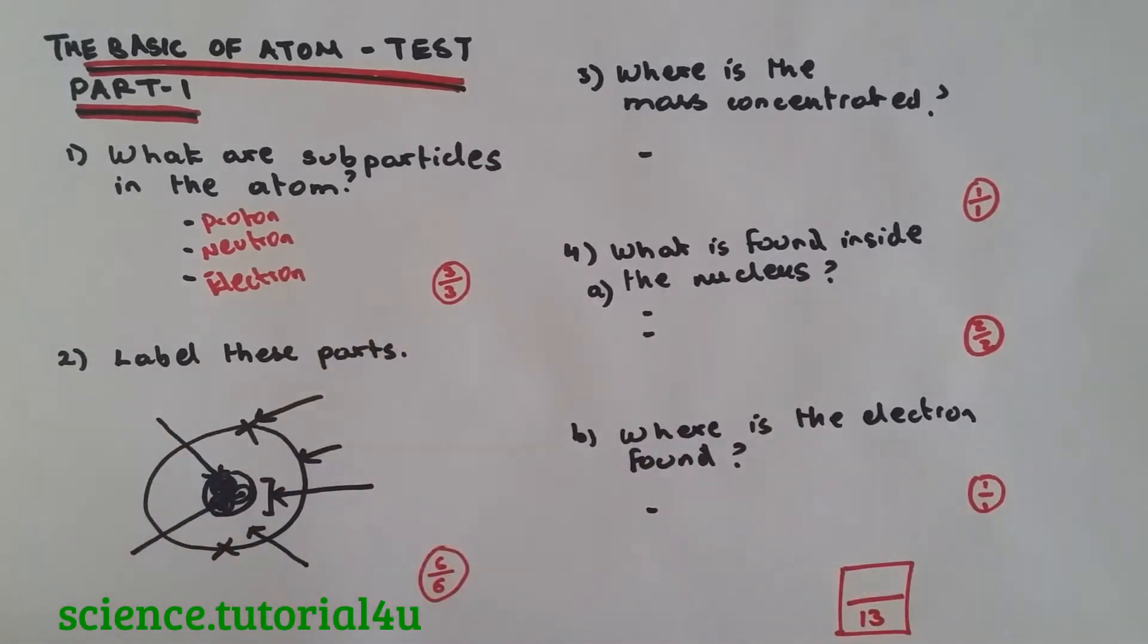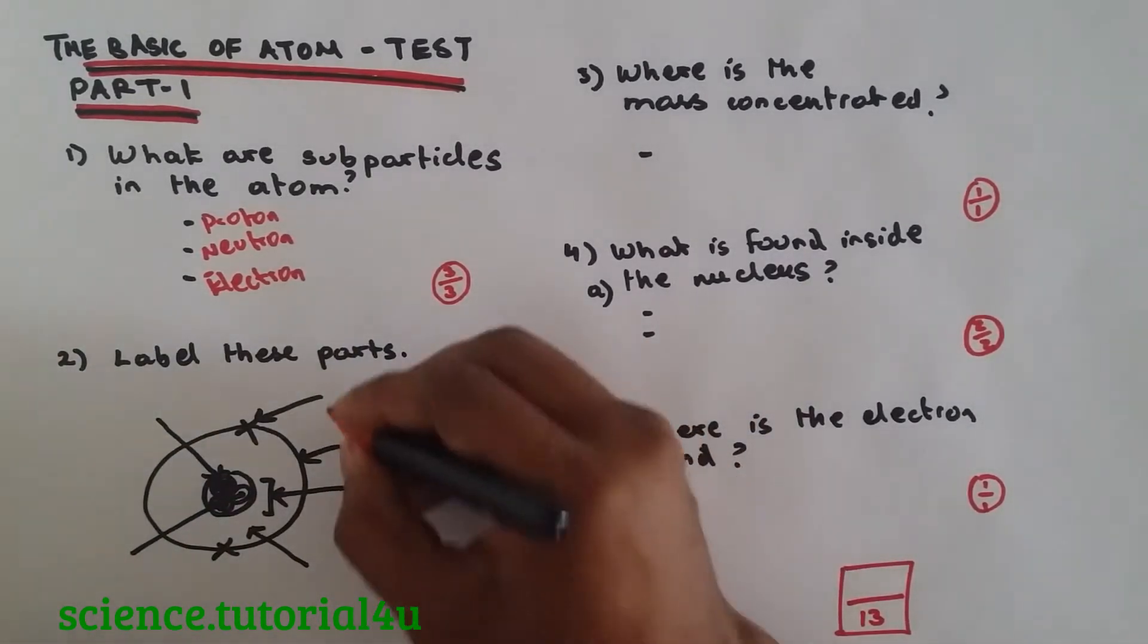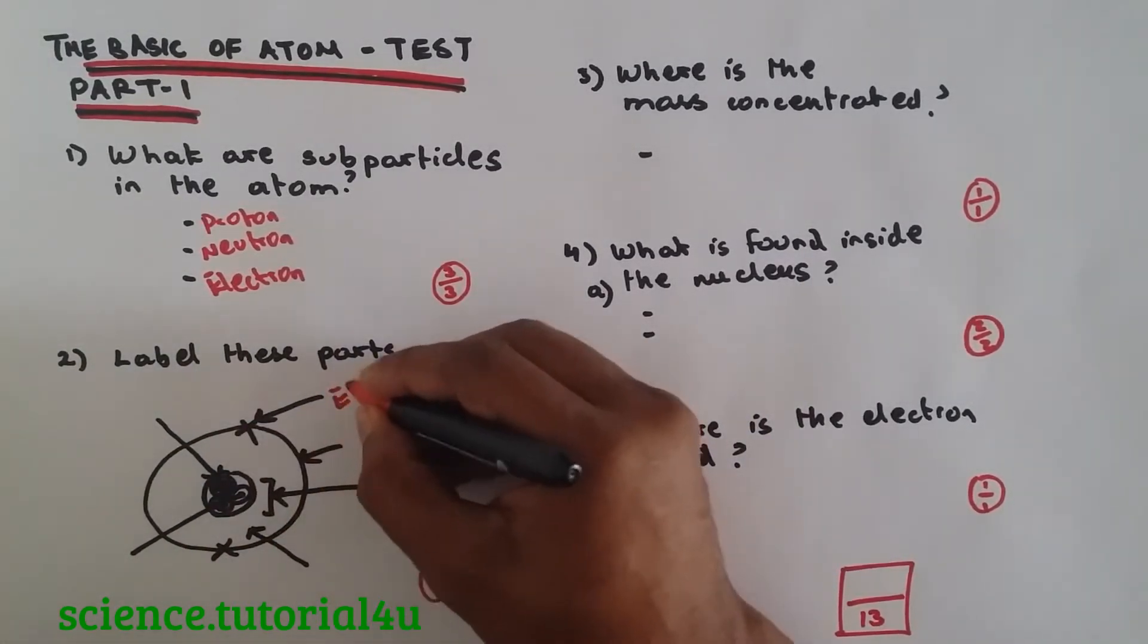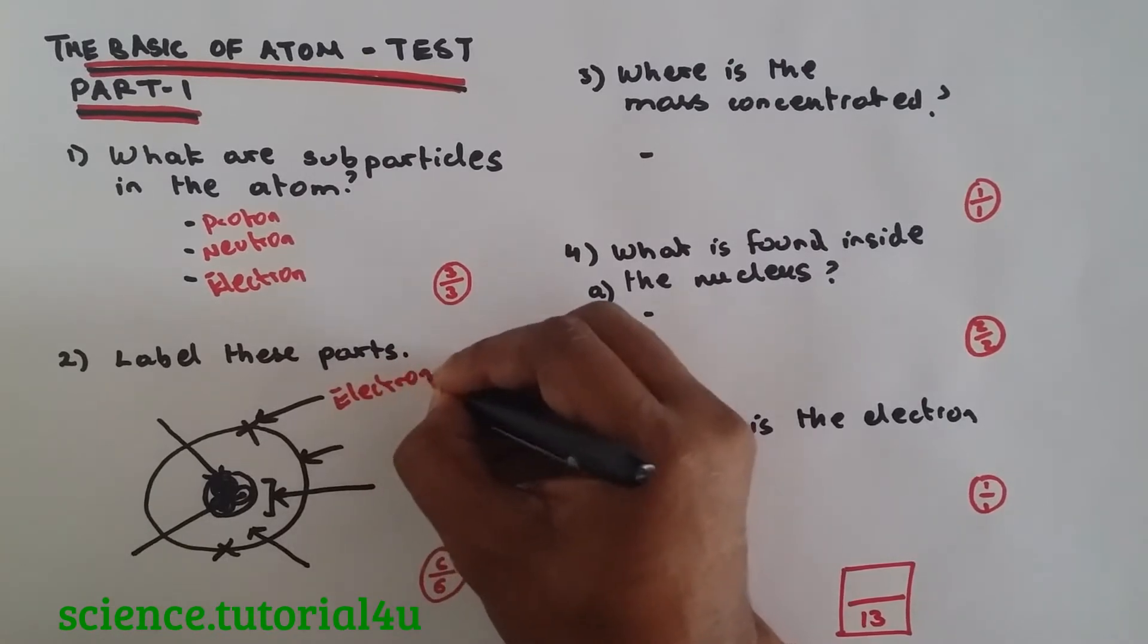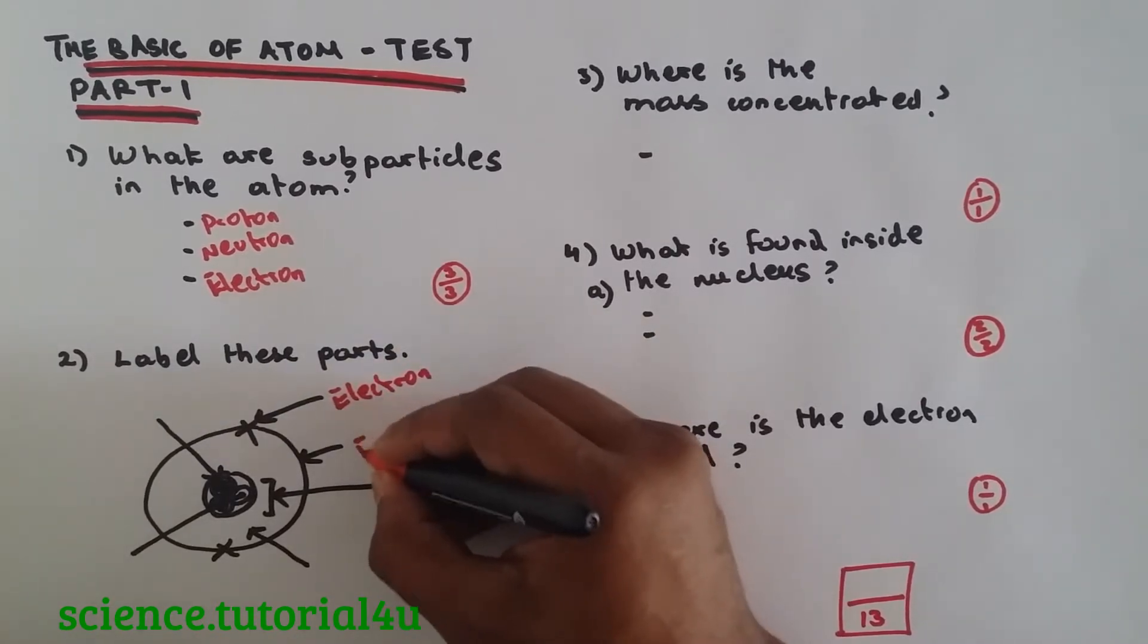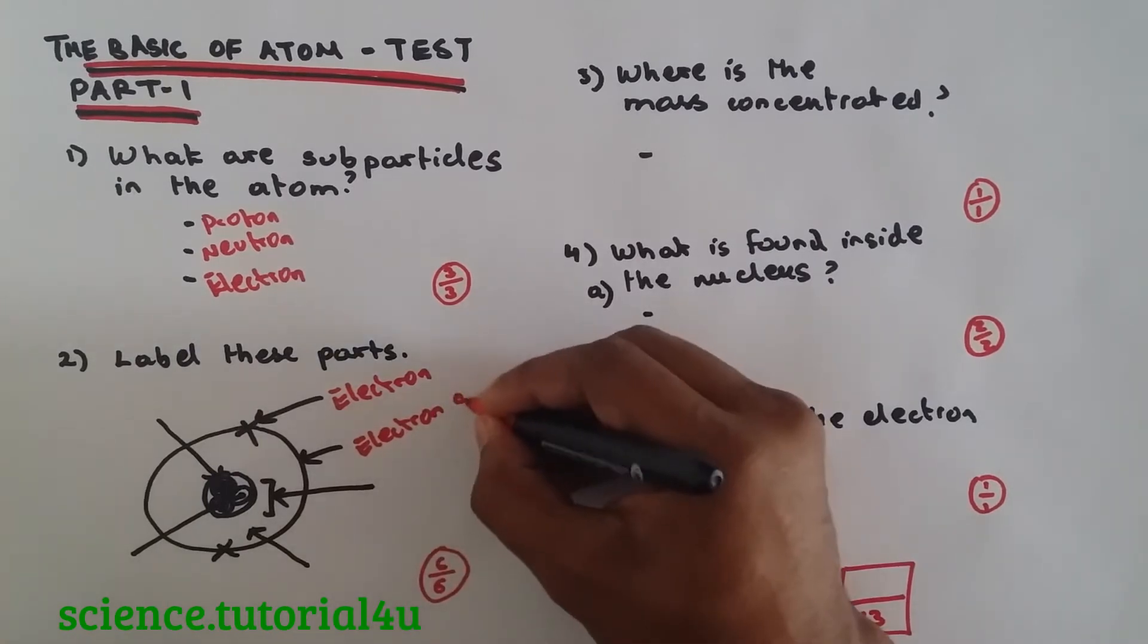Now, label these parts. This is the structure of an Atom and I'm sure you would have got this right. This is the Electron, this is the Shell or Electron Shell. You could call it Shell or Electron Shell, it doesn't matter.